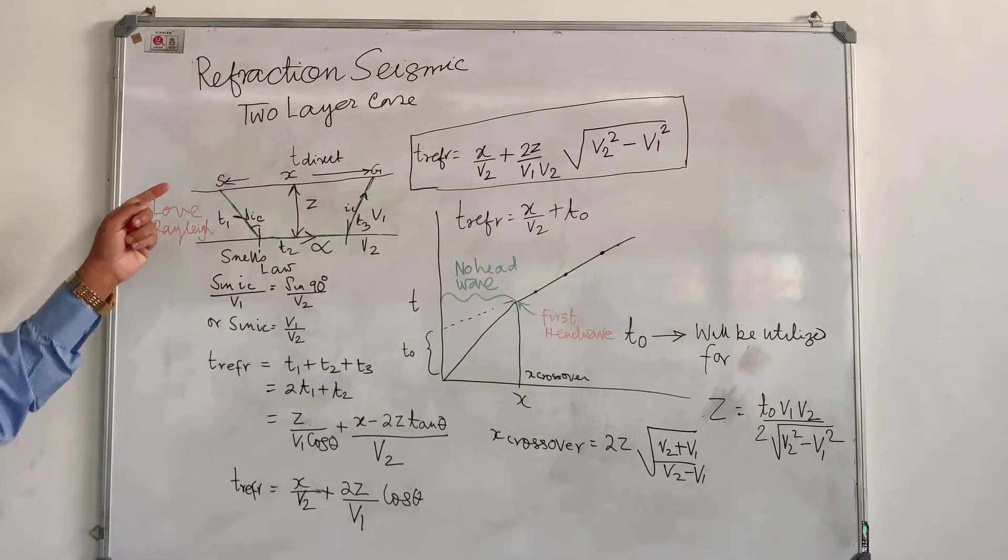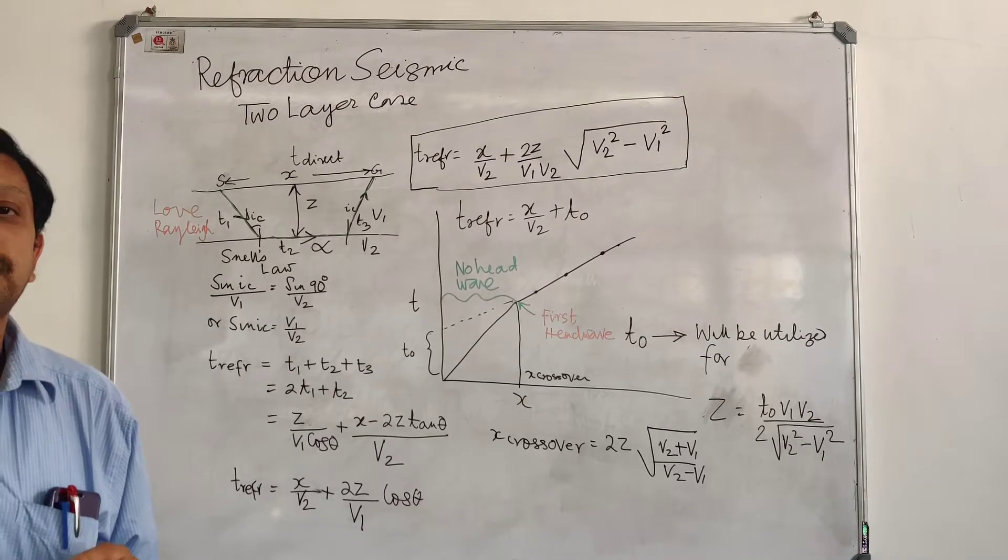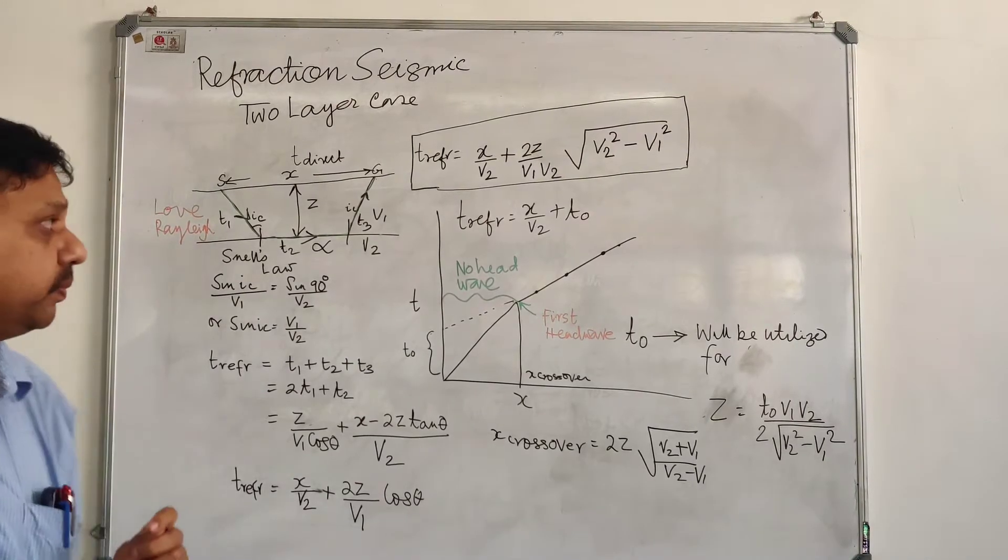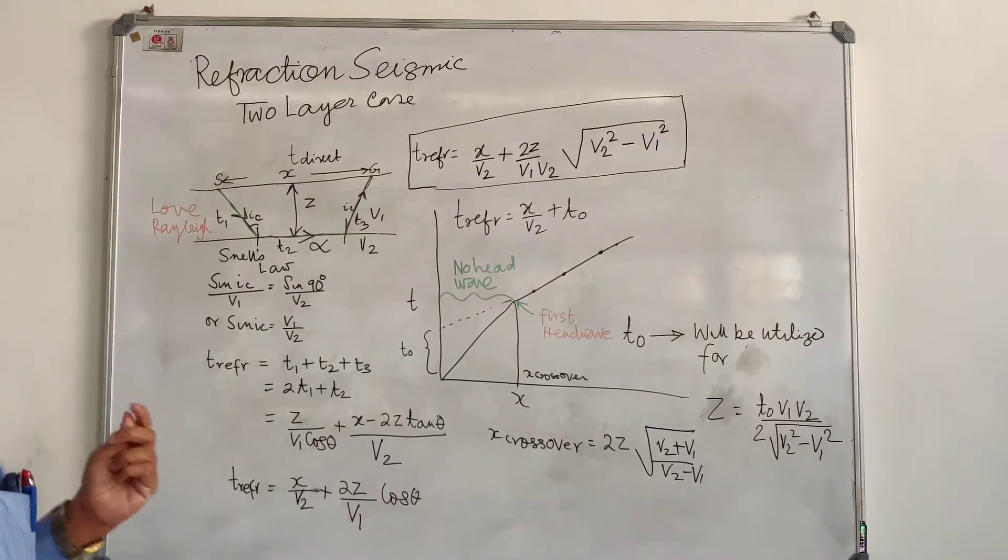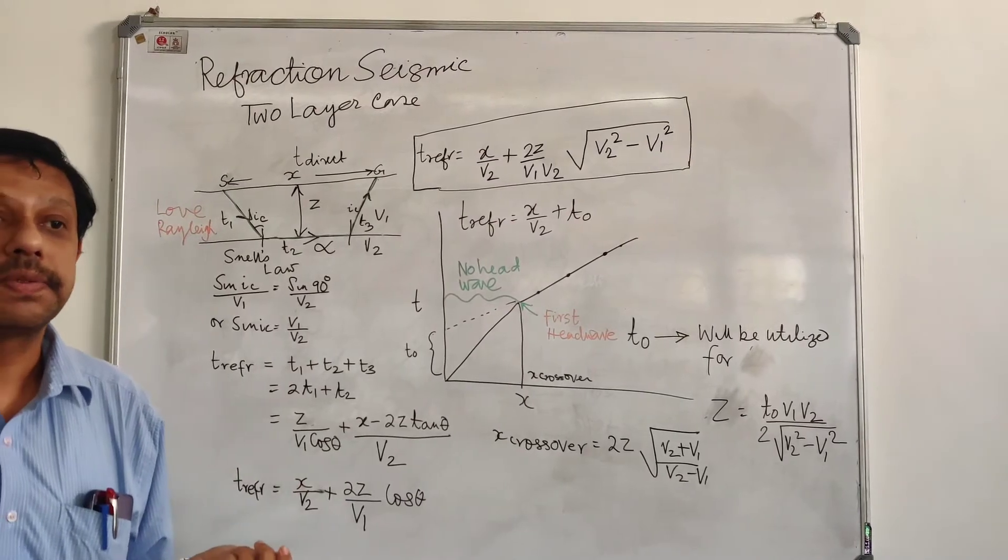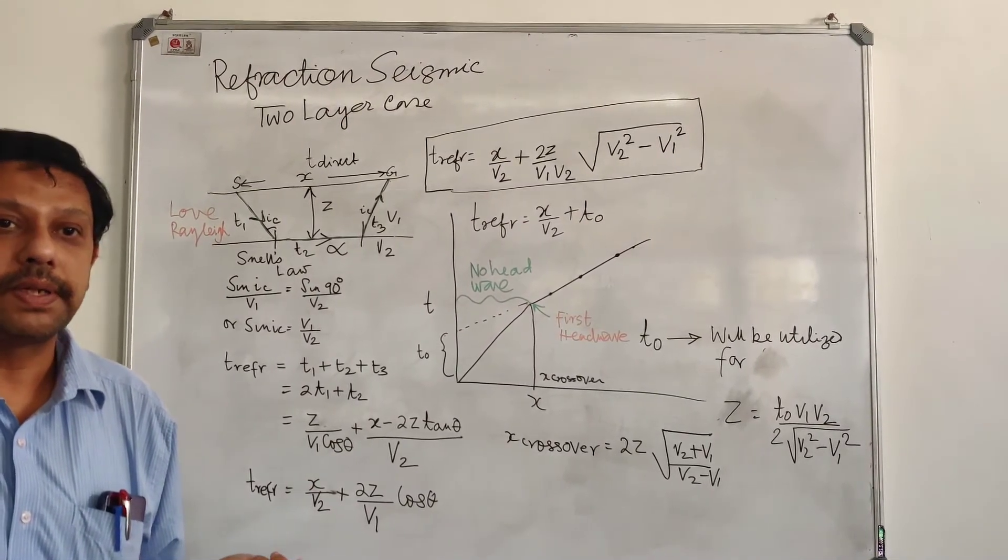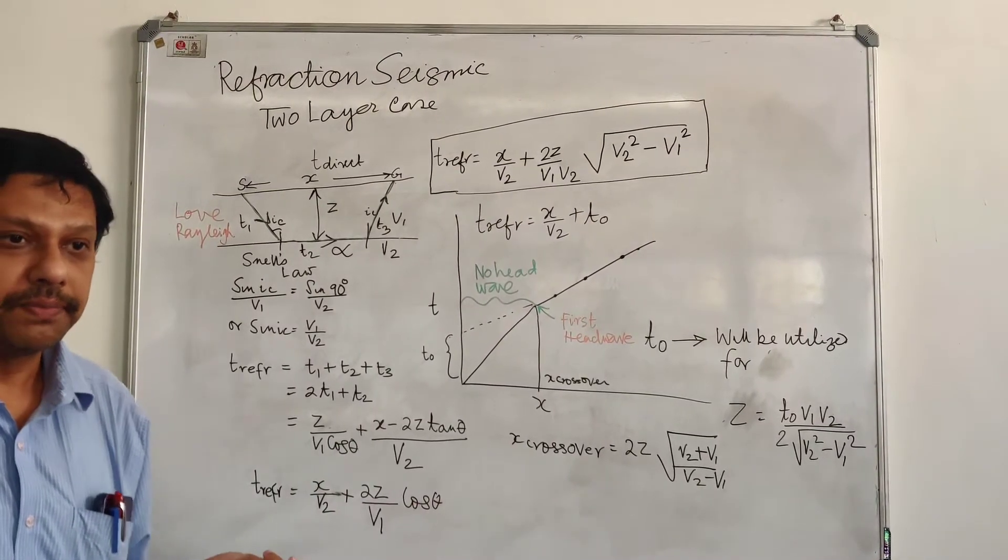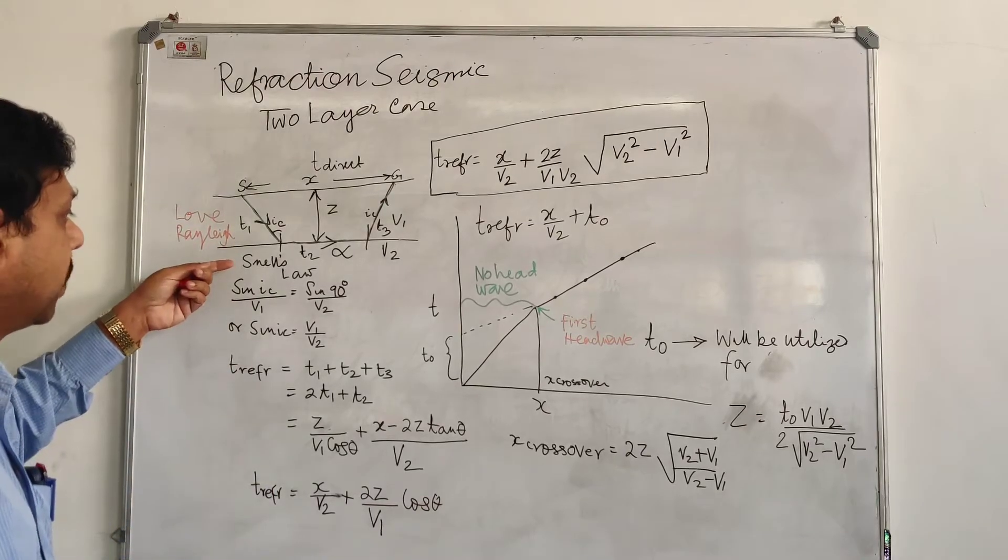The distance between the source and geophone is known as offset. And we all know from our understanding of sound and light, which we have learned in class 10 and 12, that what is Snell's law?